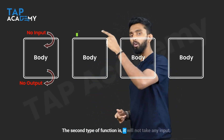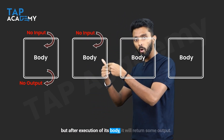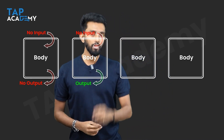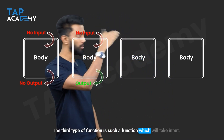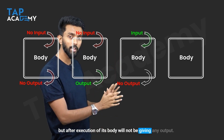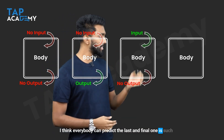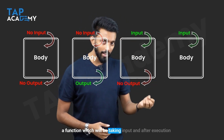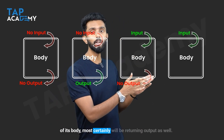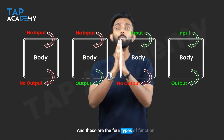The second type of function will not take any input, but after execution of its body it will not be giving any output. The last and final type is a function which will be taking input and after execution of its body will most certainly be returning output as well. These are the four types of functions. Clarity will only come once I write some code.